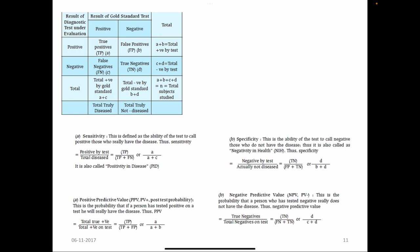Sensitivity is positivity among the diseased: true positives divided by true positives plus false negatives. Specificity is negativity in the healthy: true negatives divided by false positives plus true negatives. So true negatives are on the top of the denominator. This is how we calculate sensitivity and specificity from the 2x2 table.